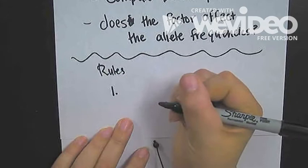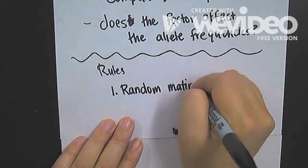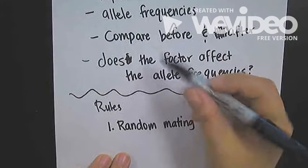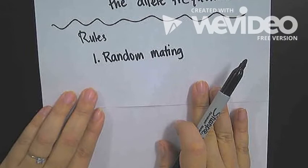Number one, the first thing that we need to establish is random mating. If a population is to be in Hardy-Weinberg equilibrium, that is to say that the frequencies, the allele frequencies are not going to be affected, it has to be random mating. You can't have any sexual selection or preference going on.